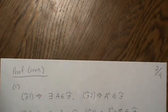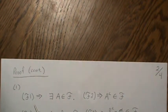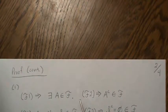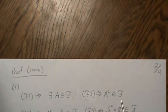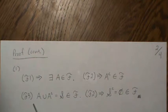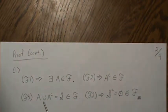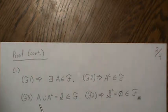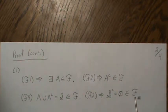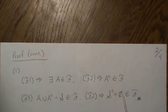To prove corollary one: F1 implies there exists an A in F because F is non-empty. F2 implies that A complement is in F. So now we know A and A complement are in F. Based on F3, the union of two sets in F is also in F, and A union A complement is S. So the sample space is in F. And since S is in F, its complement — the empty set — is also in F. This proves every field must contain the sample space and the empty set.